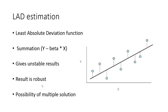Least absolute deviation does not square the difference. So the weight given to the data points is the same across all data points. There is no extra weight given to the points which are considered to be outliers. That is why it is more robust.